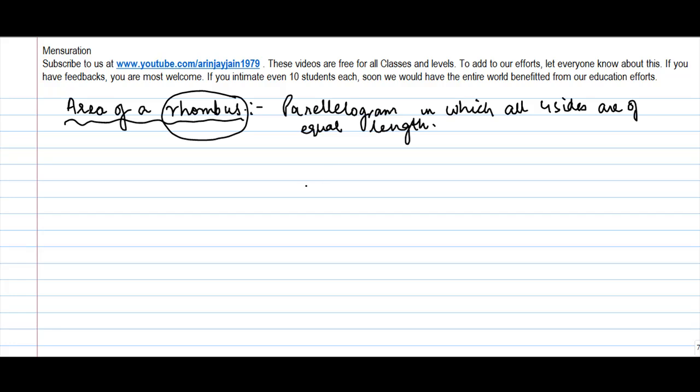So the area of a rhombus is equal to half into d1 into d2, where d1 and d2 are two diagonals. Let's see how you calculate this.